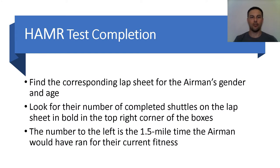Upon the HAMR test completion, you find the corresponding lap sheet for the airman's gender and age. You look for their number of completed shuttles on the lap sheet in bold on the top right corner of the boxes. The number to the left is the 1.5 mile time the airman would have ran for their current fitness level.